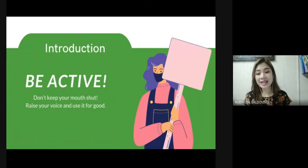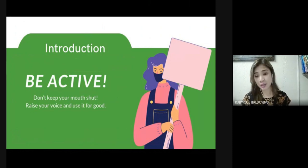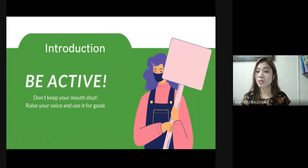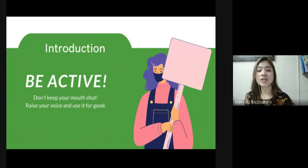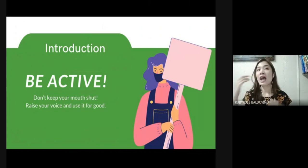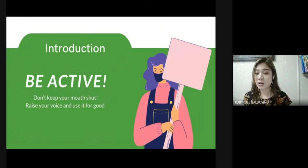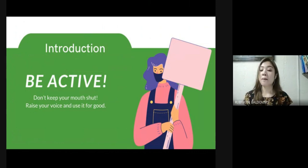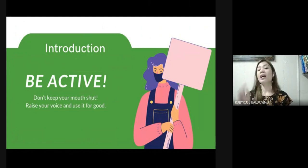Lastly, be active — don't keep your mouth shut, raise your voice and use it for good. It is not enough to just be good; we must be good for something and contribute good to the world. This is what we call active citizenship — people getting involved in their local communities and democracy at all levels. Active citizenship can be as small as a campaign to clean up your street or setting up community pantries, or as big as educating young people about democratic values, skills, and participation.